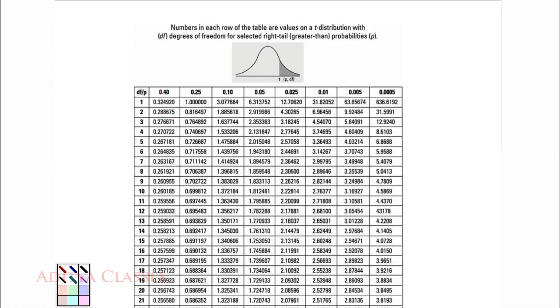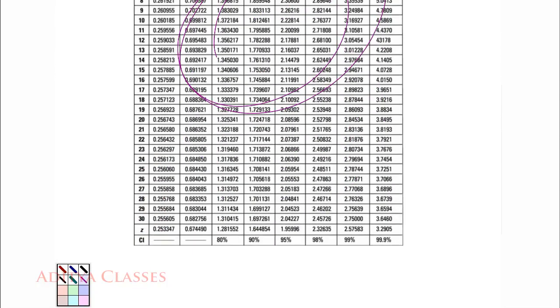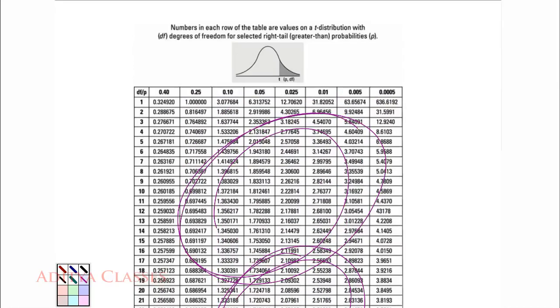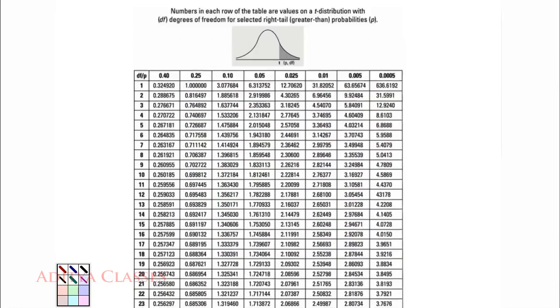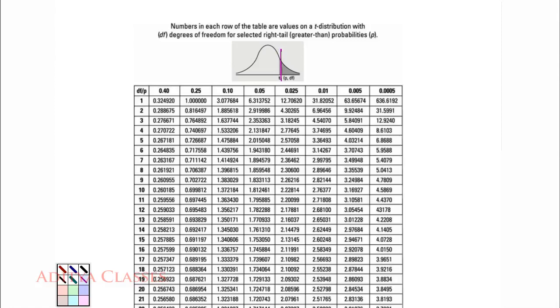you should be very much clear that all these values that you are finding from this particular table, all these values are for one-tailed tests. This figure is very informative. Don't take this figure casually. This figure is telling me that all the values over here are for one-tailed test.